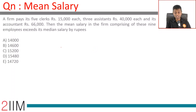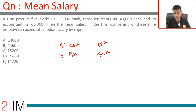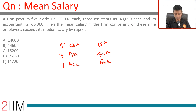A firm placed 5 clerks at 15,000 each, 3 assistants at 40k each, and 1 accountant at 66k. The mean salary in the firm comprising these 9 employees exceeds its median salary by how much?